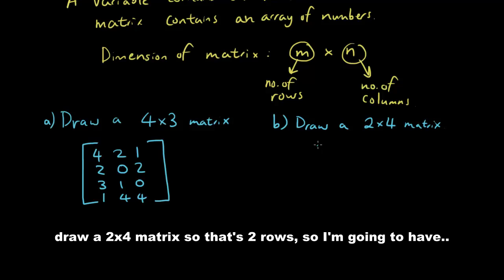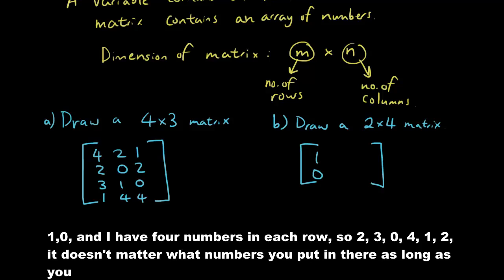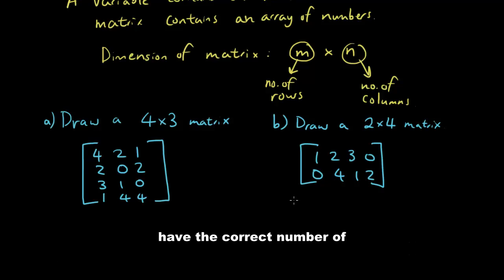Draw a 2x4 matrix so that's 2 rows so I'm going to have 1, 0 and I have 4 numbers in each row so 2, 3, 0, 4, 1, 2. It doesn't matter what numbers you put in there as long as you have the correct number of numbers.